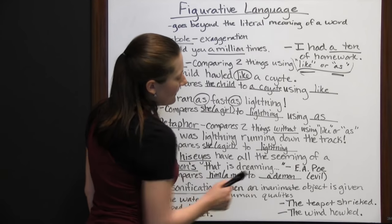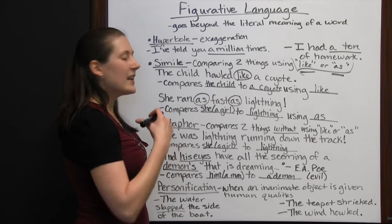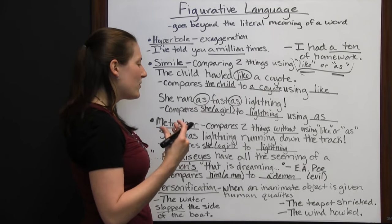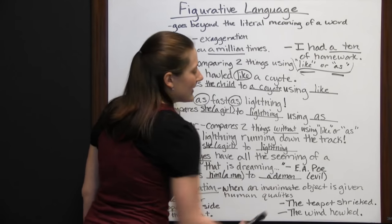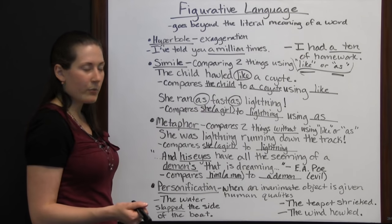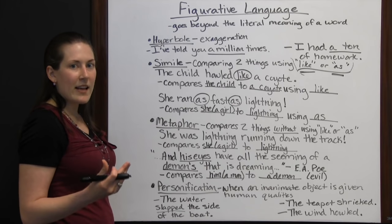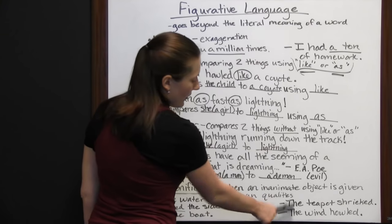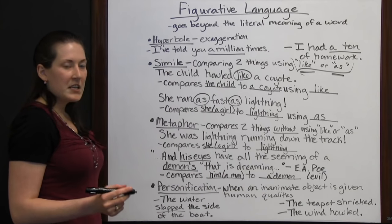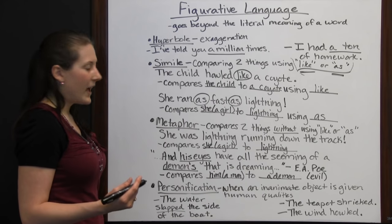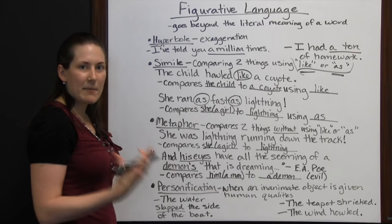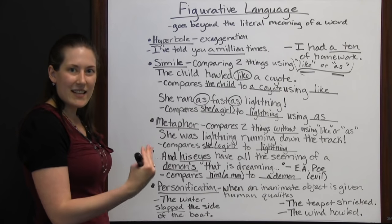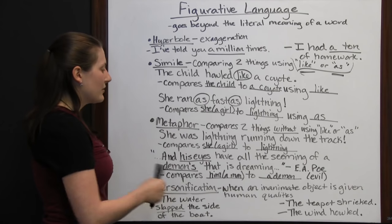Another example: "the teapot shrieked." A teapot isn't actually shrieking like a person — it's simply making that noise because hot air is escaping. "The wind howled" — wind can't howl like a wolf, but it can make that same kind of sound. The author is trying to put the sound of howling in your mind when describing the wind.